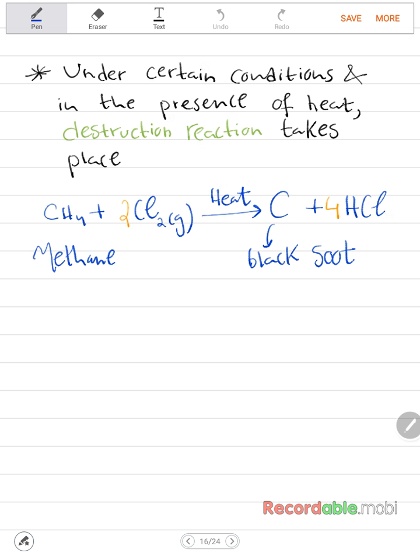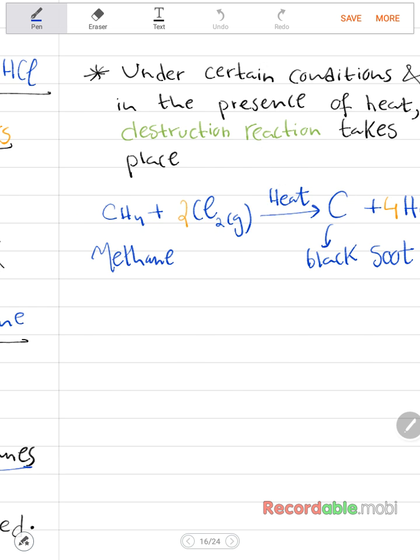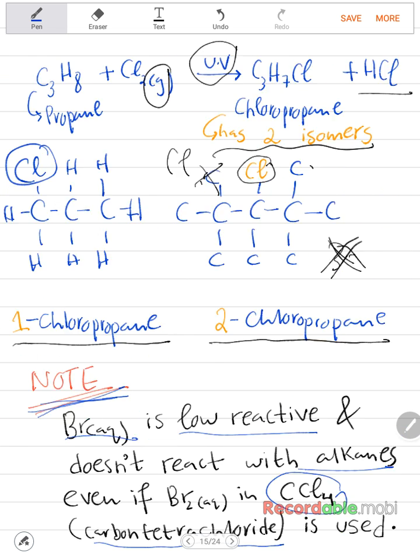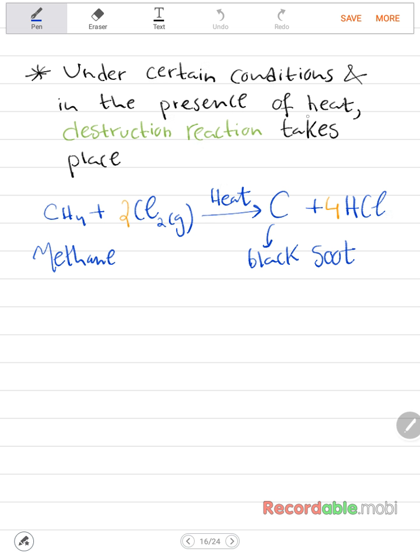Last but not least, before we end this video. We talked that if an alkane reacts with a halogen under UV light, it gives you these products that we talked about. Now if under certain conditions and in the presence of heat, so here there is heat, not UV light, there is heat. Something known as destruction reaction takes place, not substitution reaction. What happens here is we have methane and then we have chlorine. If there is heat, it will give you carbon only, it's called black soot, because it's black in color, and it gives you hydrochloric acid. That's only in the case of heat, in the presence of heat, destruction reaction takes place and not substitution reaction.